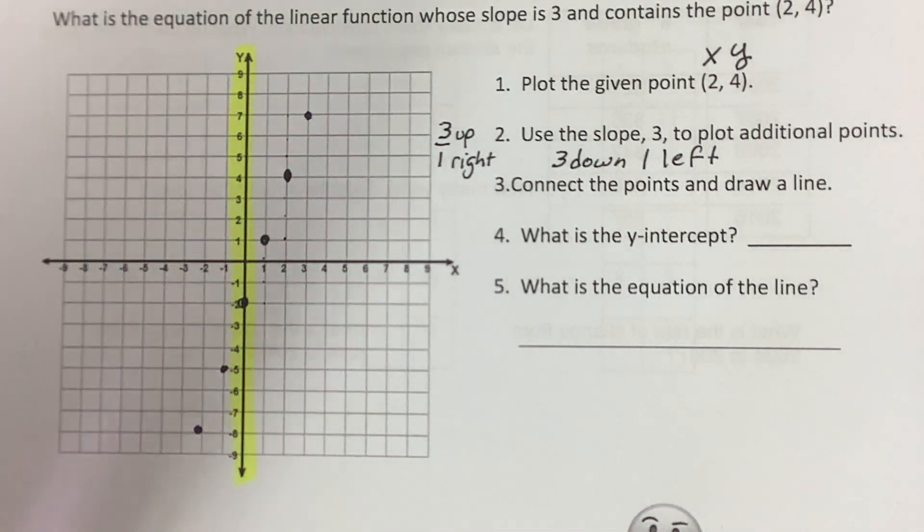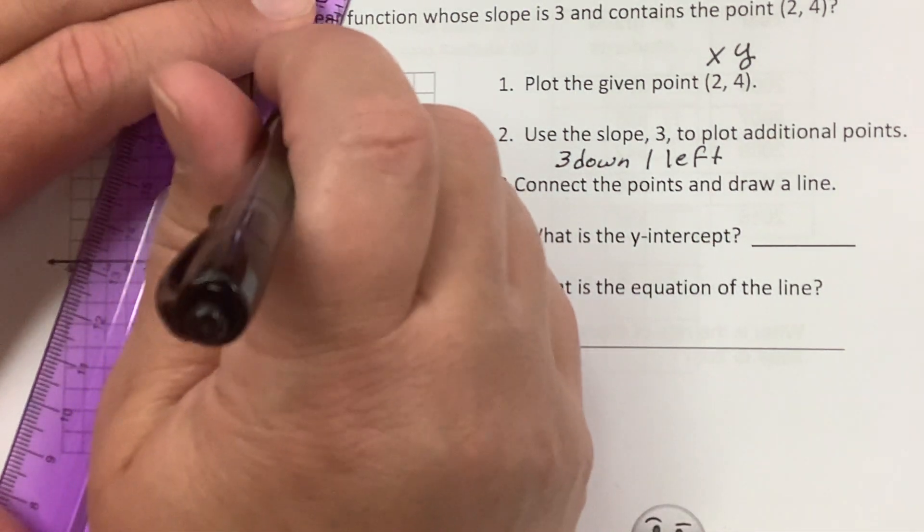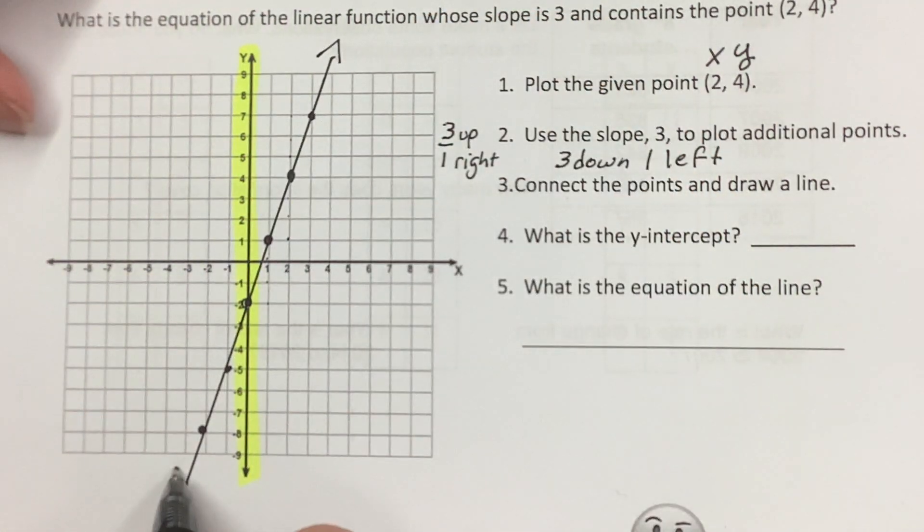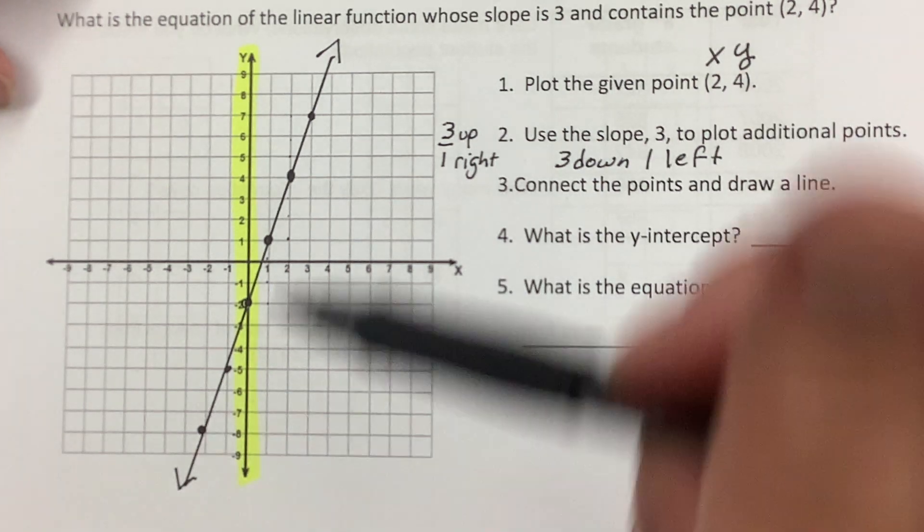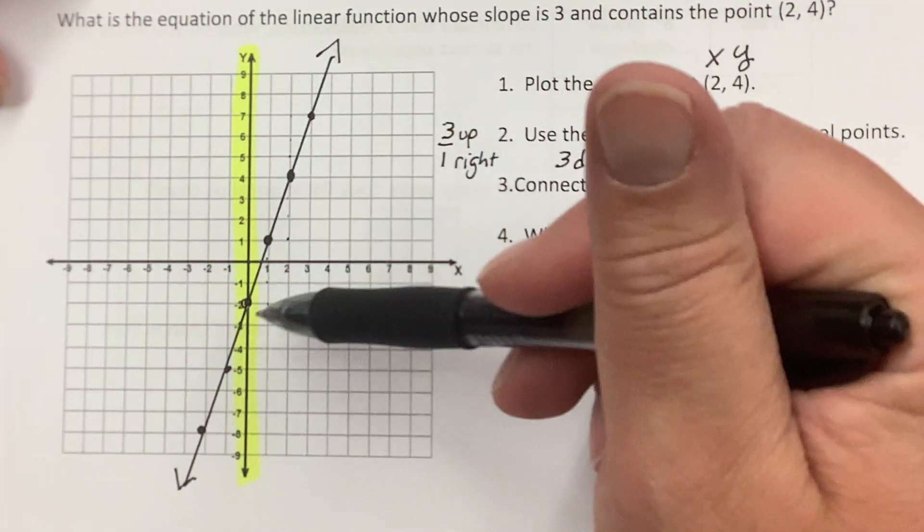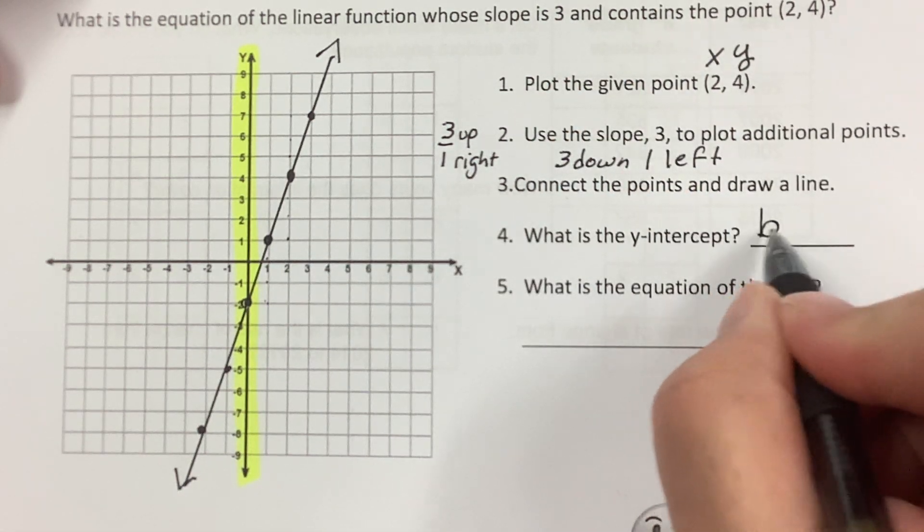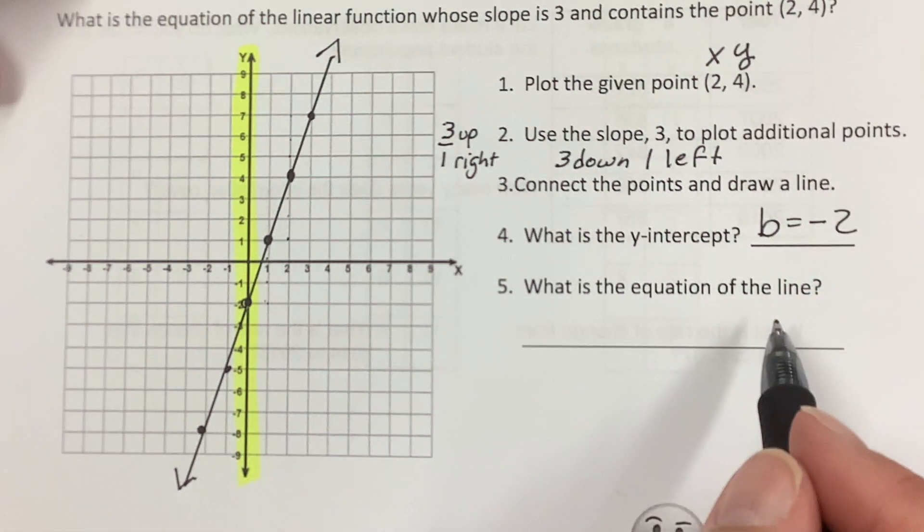And when I connect the points, I'm going to go above the grid, through all my points, and below the grid. Arrows on both sides. Now, what's the y-intercept? Well, looking at the yellow line, it crosses at negative 2. So what's the y-intercept? b equals negative 2. So what's the equation of the line?